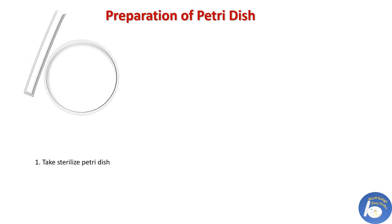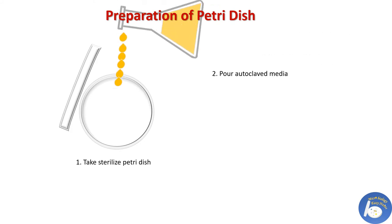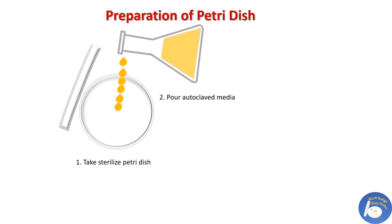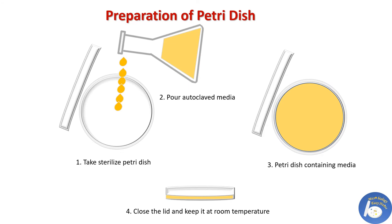Preparation of Petri dish: First, take a sterilized or disposable Petri dish. Pour autoclaved media into it. Now we have a Petri dish containing media. Close the lid and keep it at room temperature. After 24 hours, observe the plate. If there is contamination, discard the plate and prepare a new one. Otherwise, this plate is ready for further use.